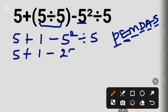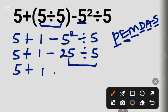The next thing is multiplication. There is no multiplication, followed by division. 25 divided by 5 is 5, so we have 5 here: plus 1 minus 5.